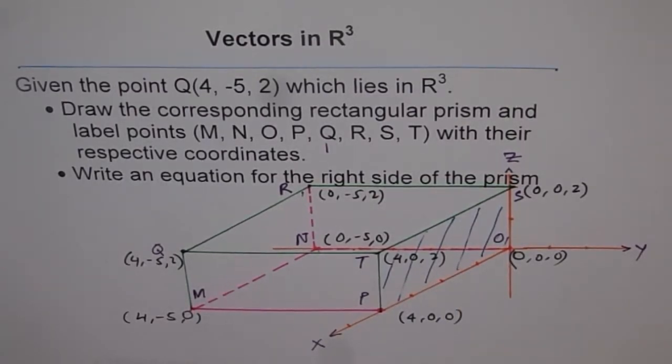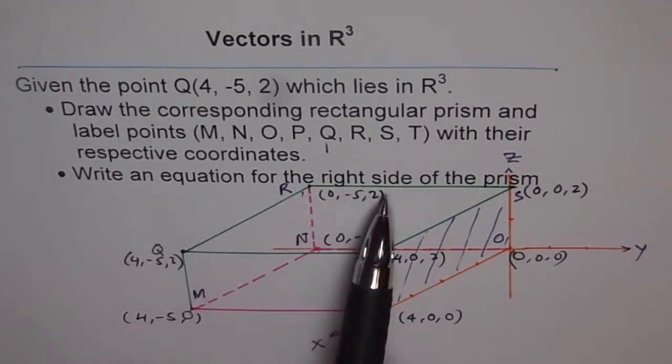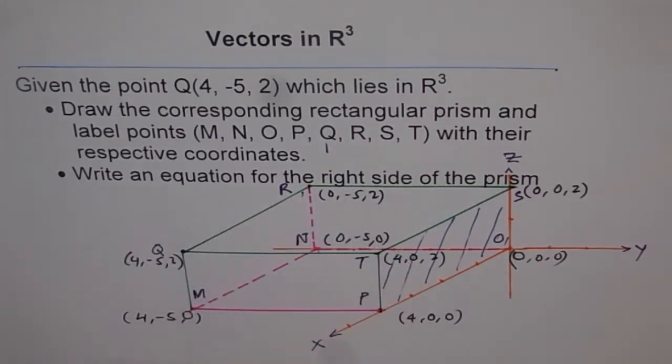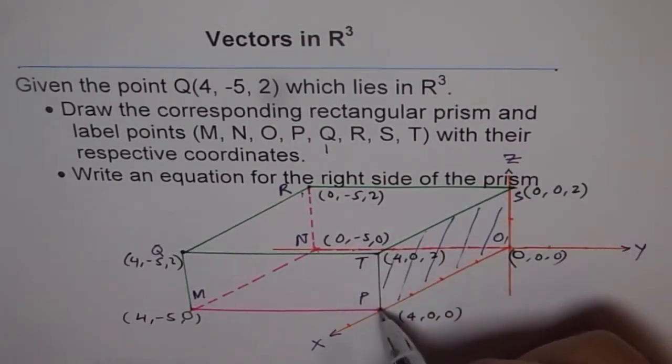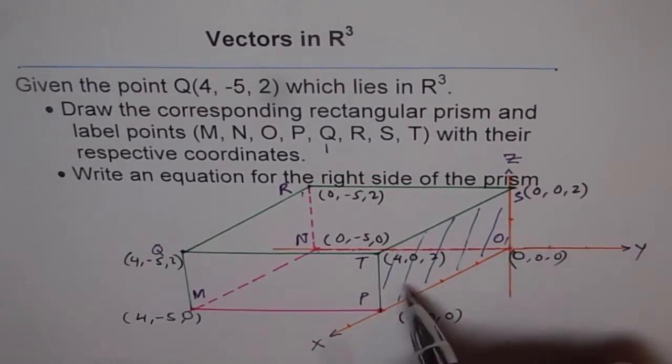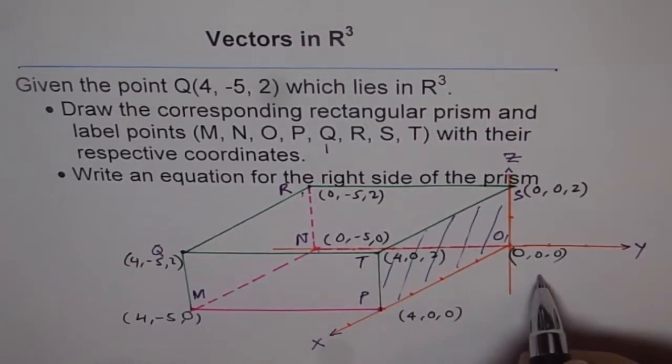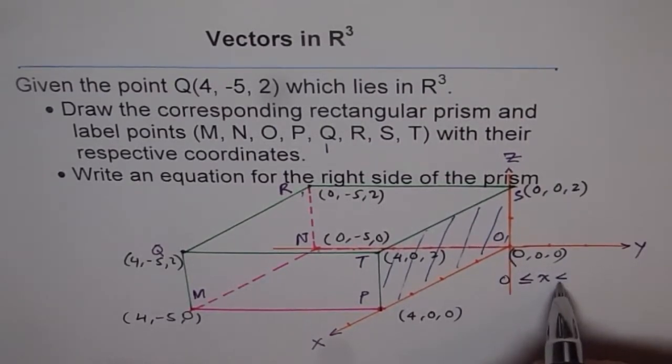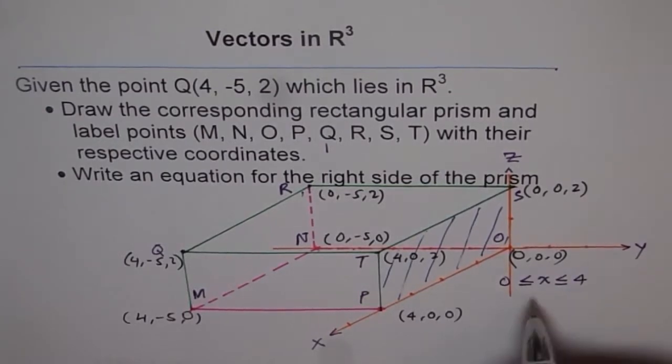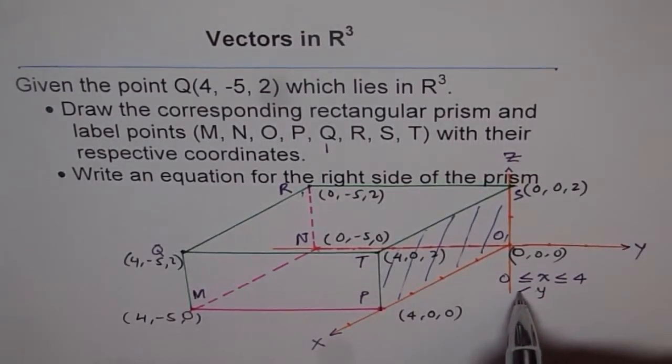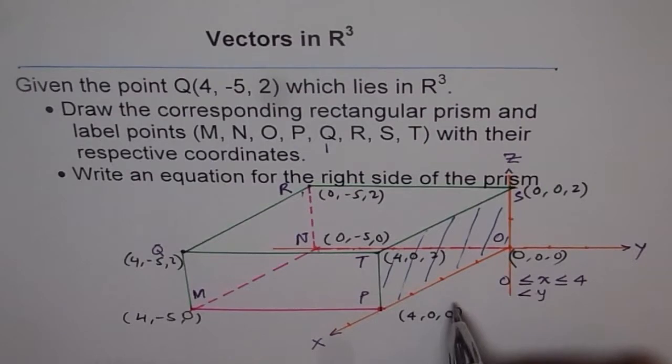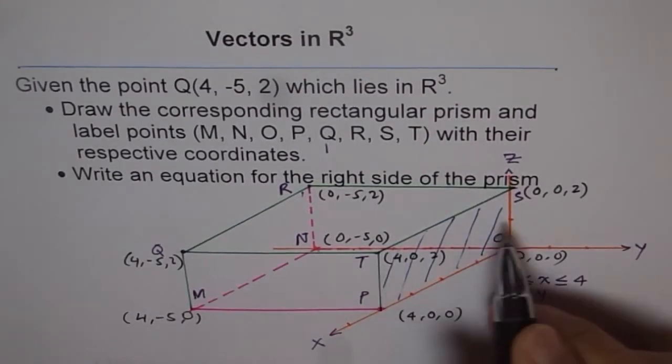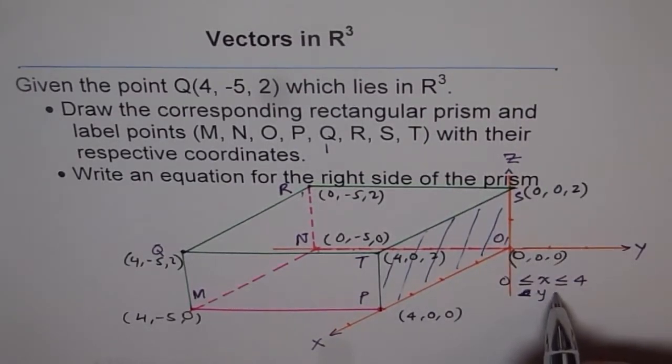Answer this question. Write an equation for right side of the prism. Now that is kind of complicated. So if you see the right side of the prism, what do you notice? So you see that X values here change from what to what? So here, X value is greater than or equal to 0, but they are less than or equal to 4. How about the Y values? So Y value in this place is what?